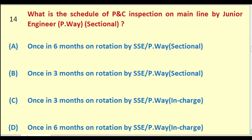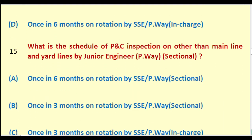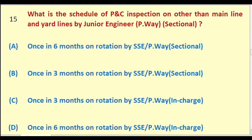What is the schedule of PNC inspection on main line by Junior Engineer Permanent Way Sectional? Options: once in six months on rotation by SSE PW Sectional; once in three months on rotation by SSE PW Sectional; once in three months on rotation by SSE PW in charge; once in six months on rotation by SSE PW in charge. The right answer is: once in three months on rotation by SSE Permanent Way in charge.